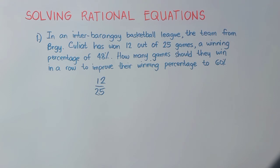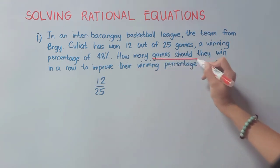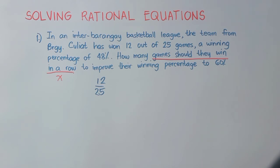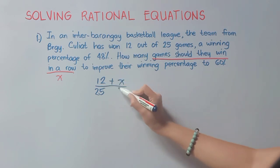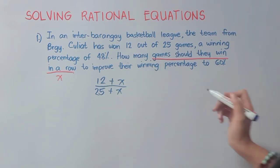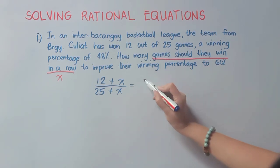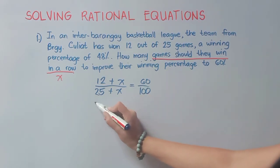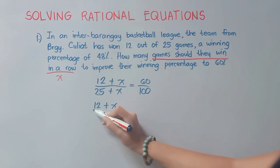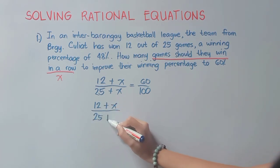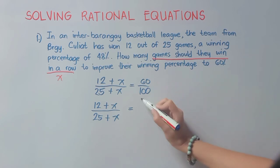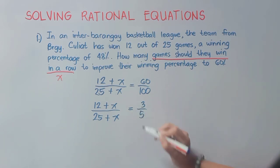Barangay Culiat has won 12 out of 25 games already. If we divide, that gives 0.48 or 48%. We have to add the number of games they should win in a row to improve their winning percentage. Since this number is still unknown, we place x.